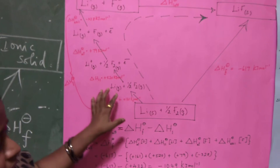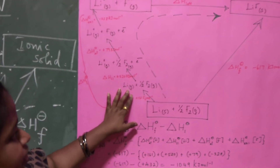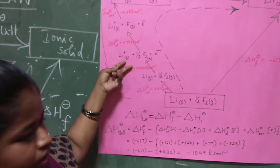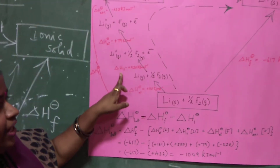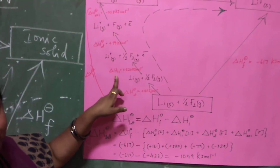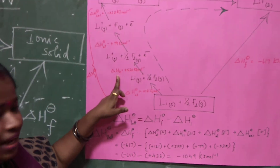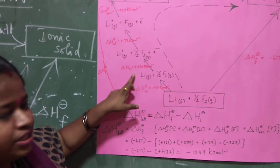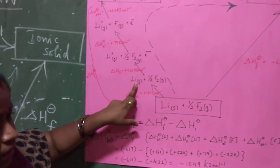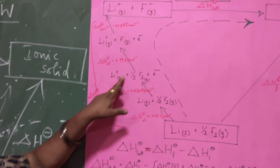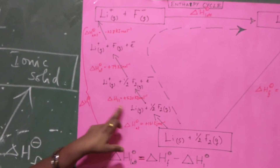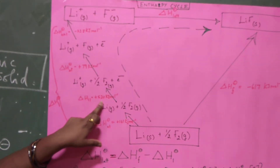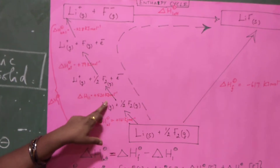Once you get the gas atom, you have to convert the atom into an ion. This is ionization — when an atom loses its electron. I1, that means first ionization: when lithium loses its electron, it ionizes. This is also an endothermic reaction, which is why it has a positive value.